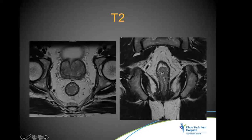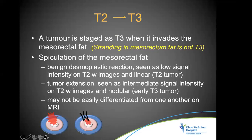A polypoid T2 tumor shows a preserved muscular layer. We should be wary of longitudinal muscle fibers, vessel channels, or desmoplastic reaction that can appear as linear projections beyond the wall. When the muscularis layer is breached, the tumor is staged as T3 because the mesorectal fat is invaded. A low-signal-intensity linear speculation in mesorectal fat may represent benign desmoplastic reaction rather than true T3 tumor extension.